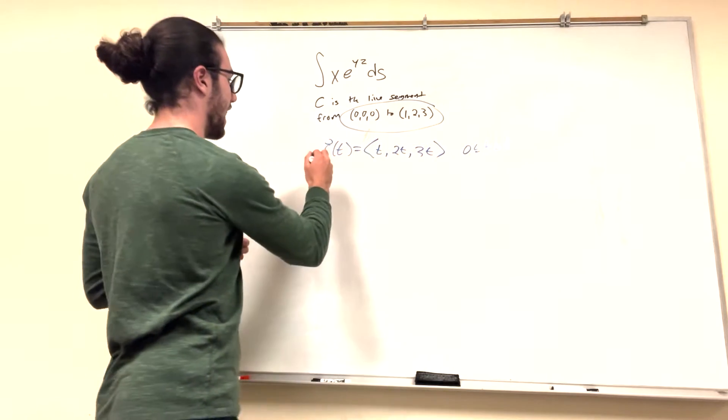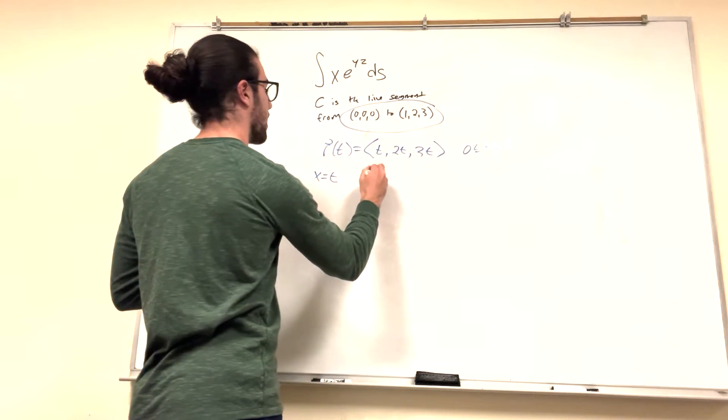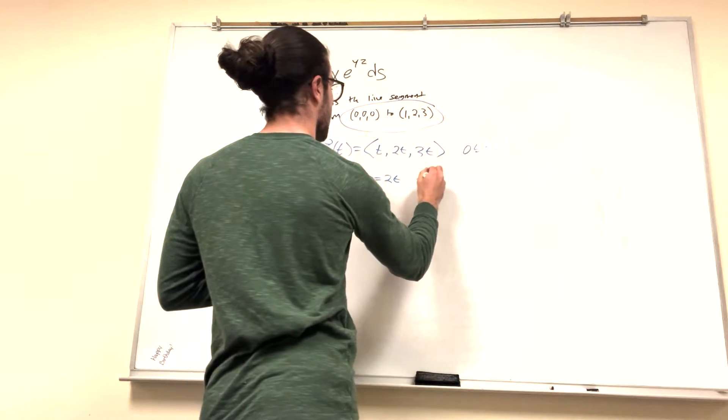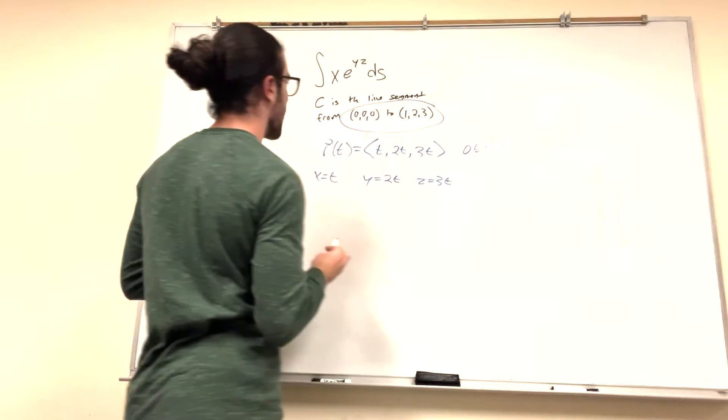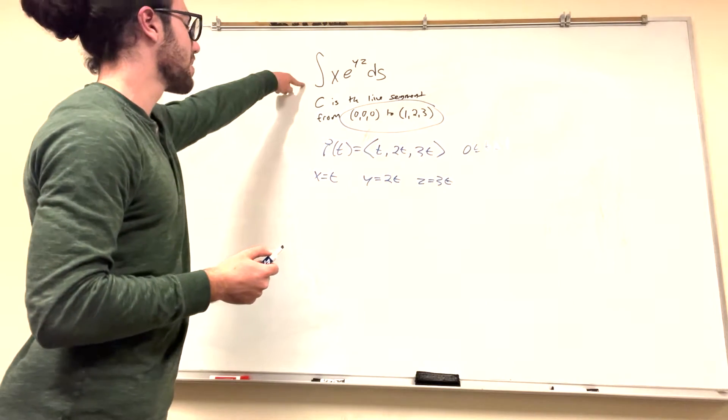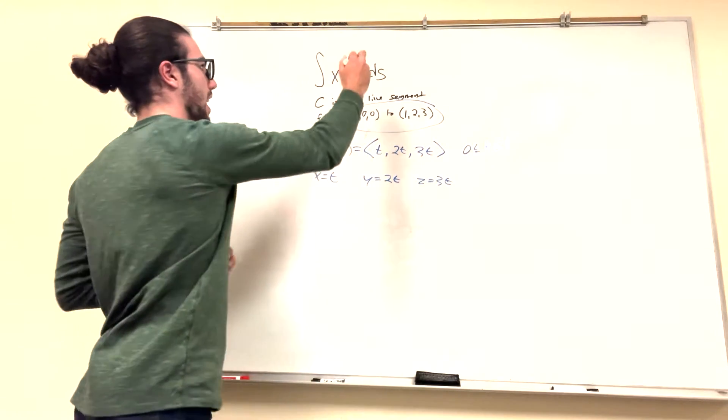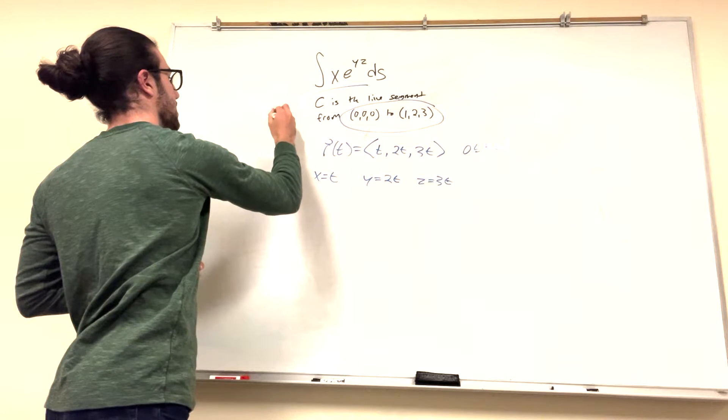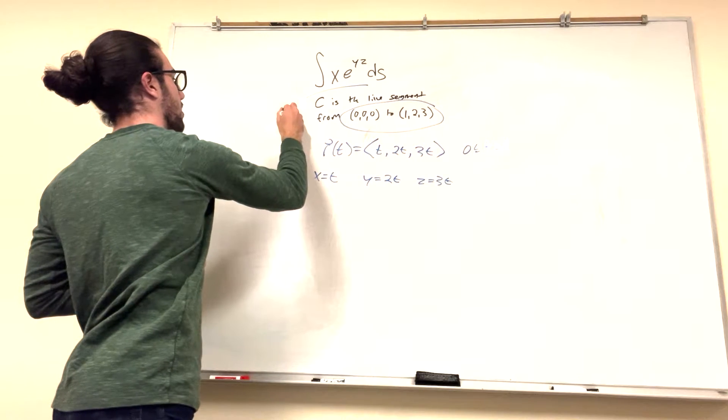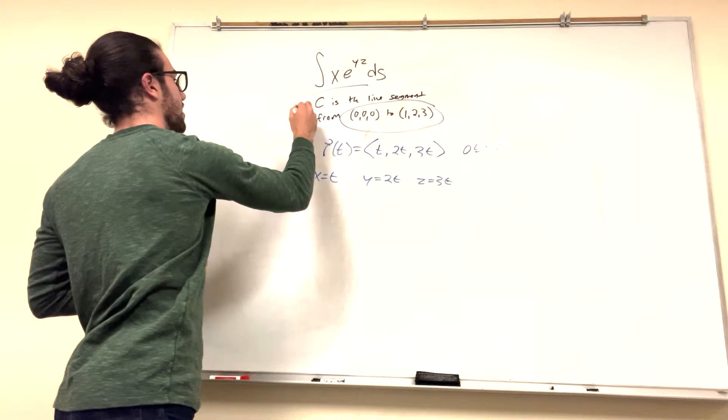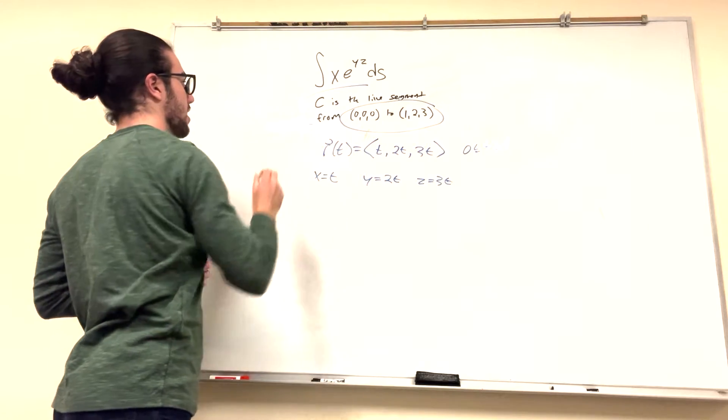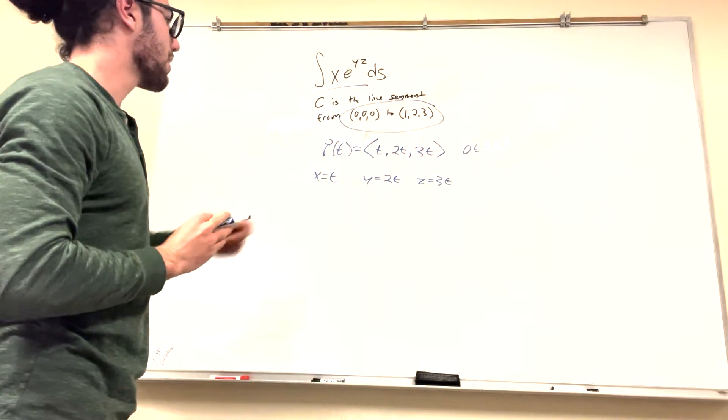So what does this mean? Well, this means that x is equal to t, y is equal to 2t, and z is equal to 3t. And we want to reparameterize this. And our formula is that ds is equal to the magnitude of r prime of t, dt. So this is in terms of t, too. And we have r of t.